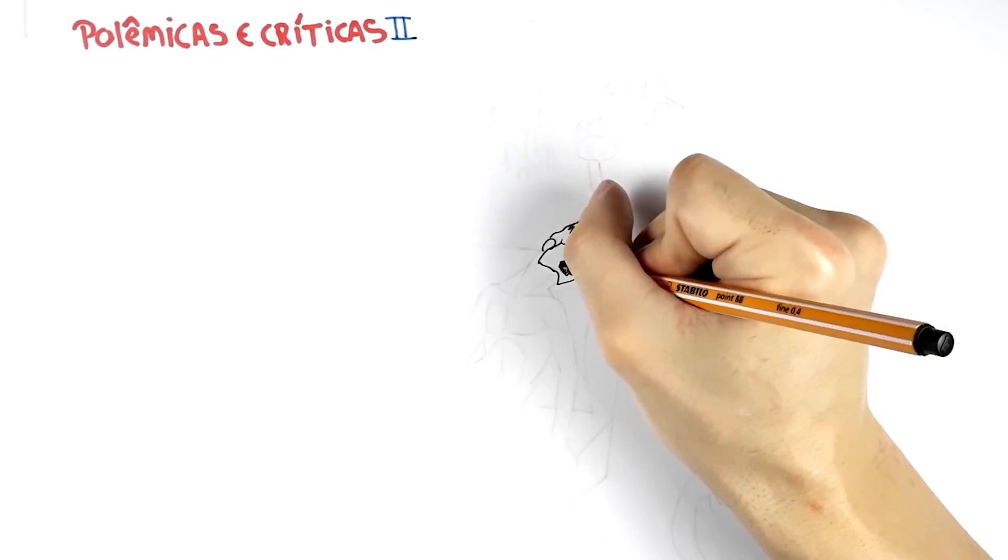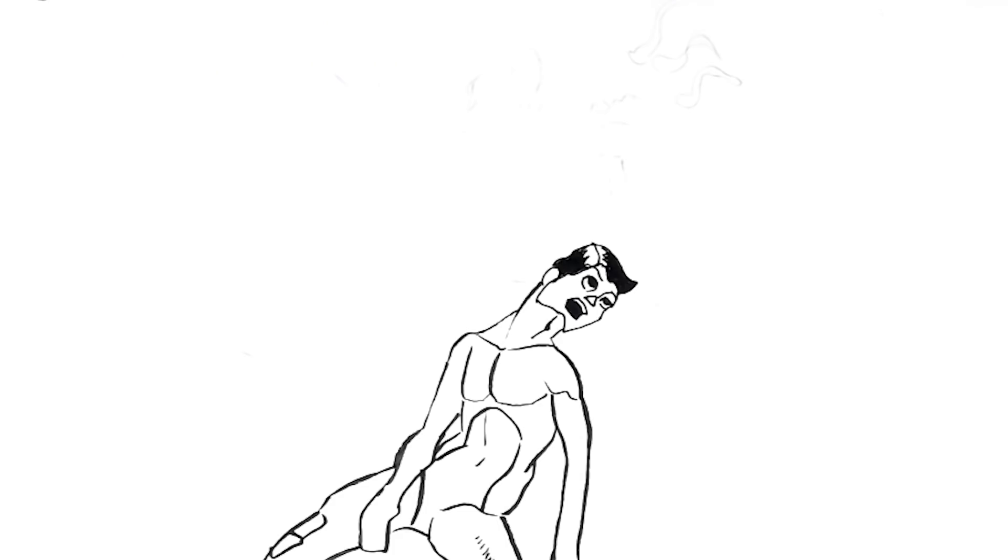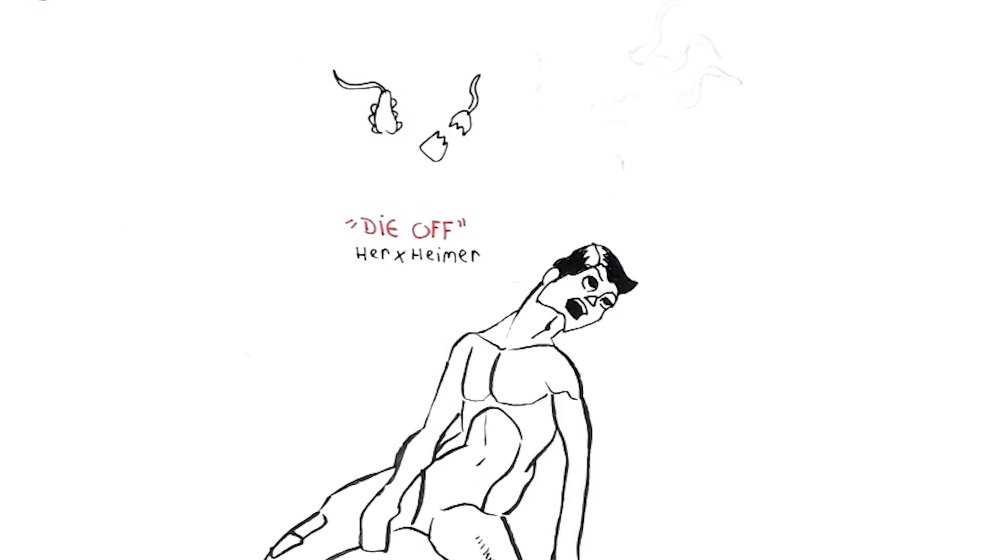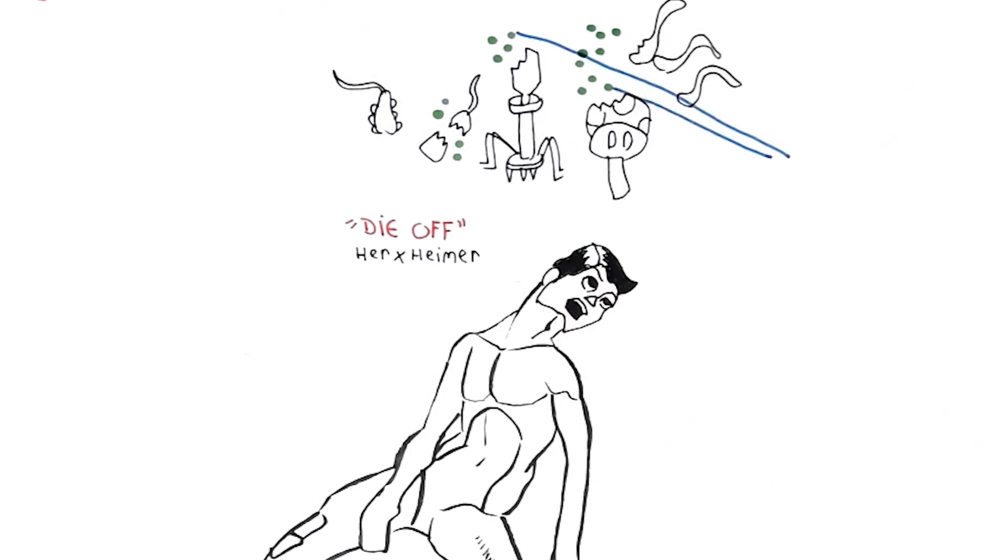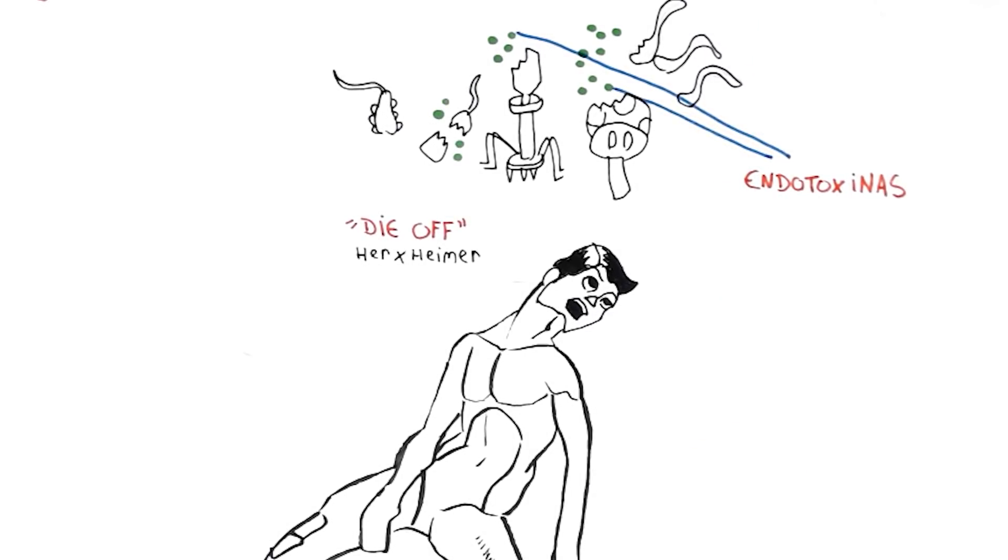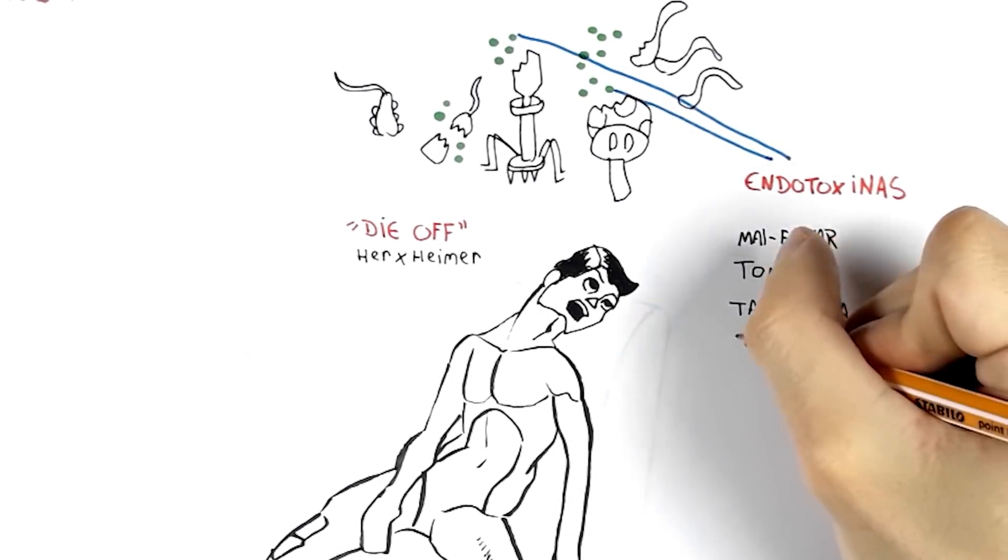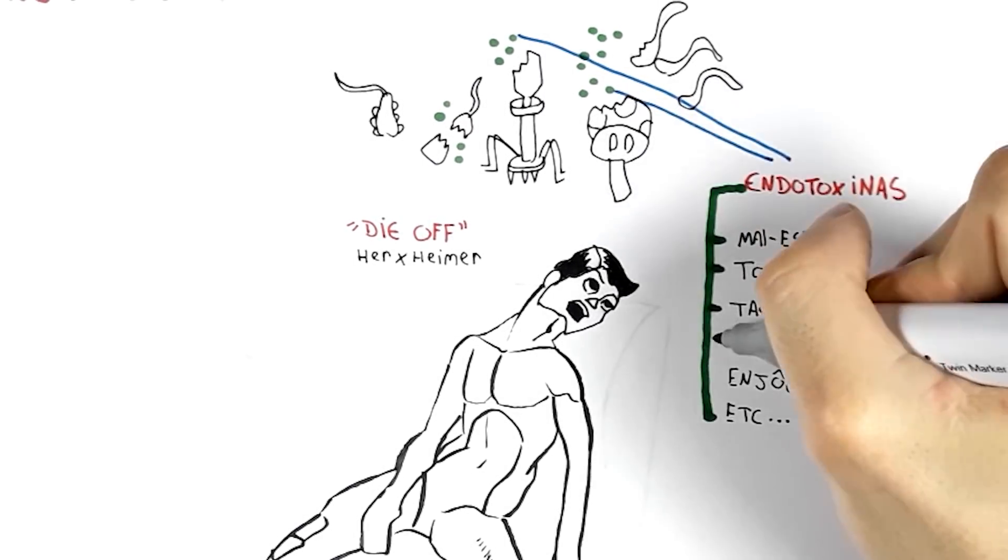Speaking of controversies and criticisms, one of the main problems that hydrogen peroxide therapy can cause are Herxheimer reactions, also known as die-off. This is when bacteria, viruses, fungi, parasites die, and with this death various toxins are eliminated, also called endotoxins, which can cause various reactions in the organism, such as malaise, dizziness, tachycardia, chills, nausea, among others. And the more infected or sick the person is, the greater the chance of a more intense Herxheimer.